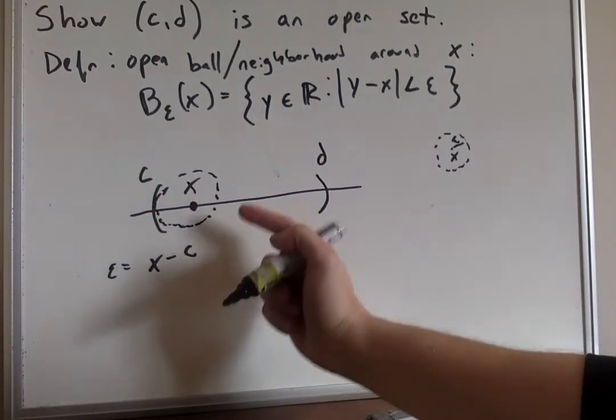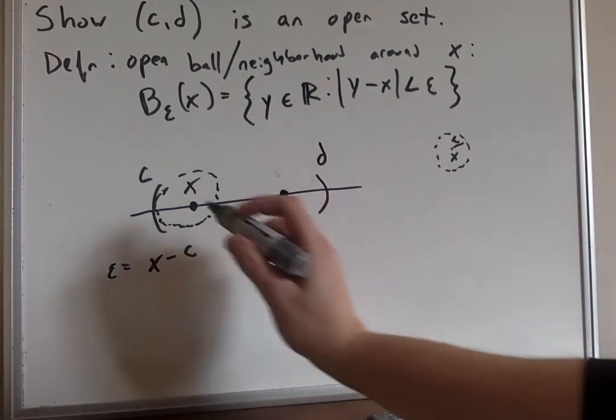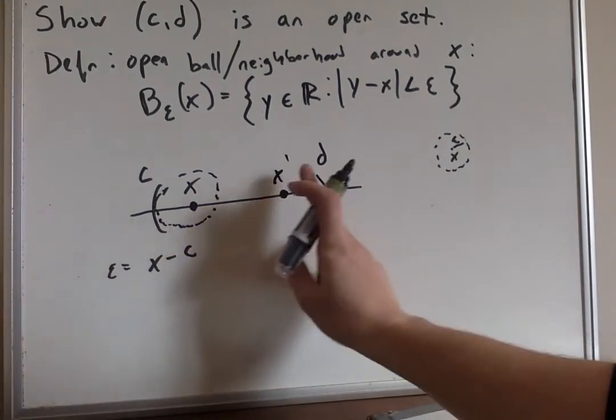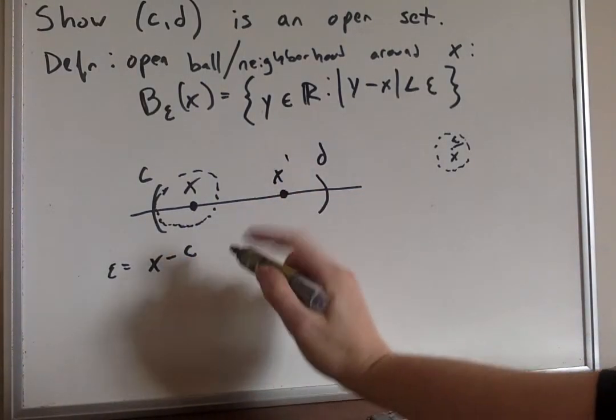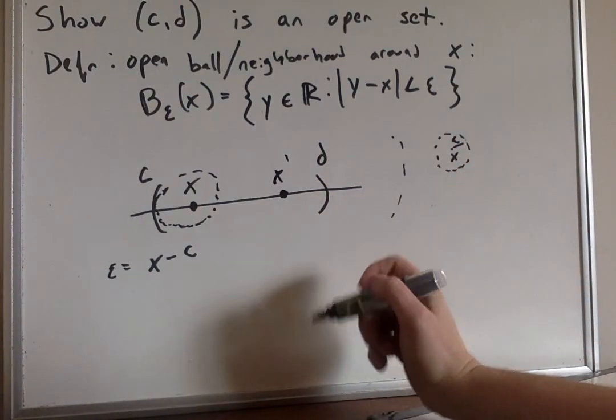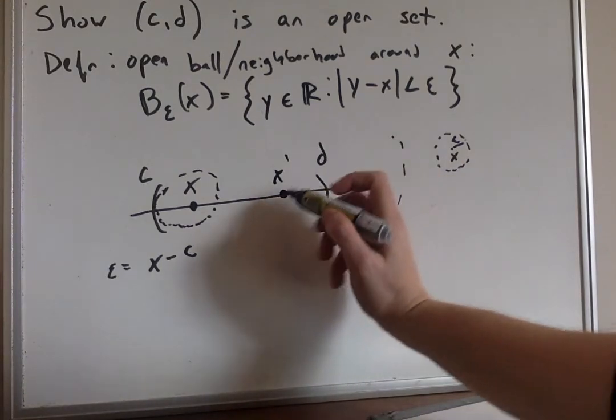But we don't just want any endpoint, because what if it was over here? We wouldn't want to use, if we had x prime over here, we wouldn't want to use x minus c as epsilon, because that would bring us all the way out to here, right? And this is not contained within our set.